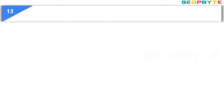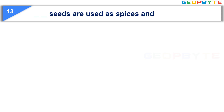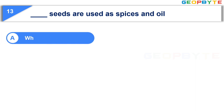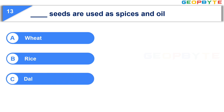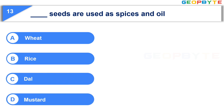Now, let us see the thirteenth question. Dash seeds are used as spices and oil. Option A, Wheat. Option B, Rice. Option C, Dal. Option D, Mustard. Your time starts now.